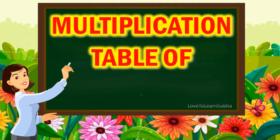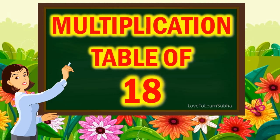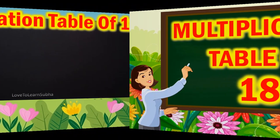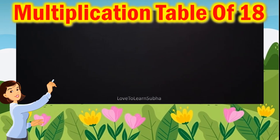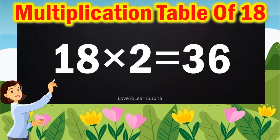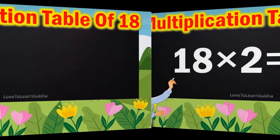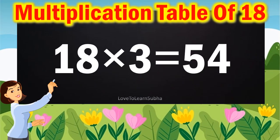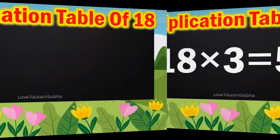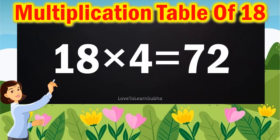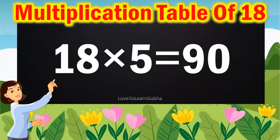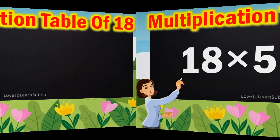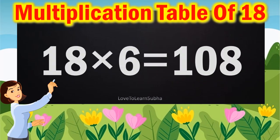Hello kids, today let us learn about the multiplication table of 18. Now let's get started. 18 ones are 18, 18 2's are 36, 18 3's are 54, 18 4's are 72, 18 5's are 90, 18 6's are 108.